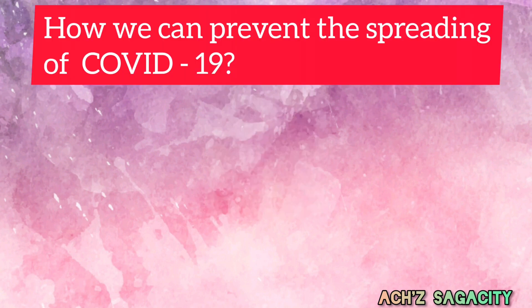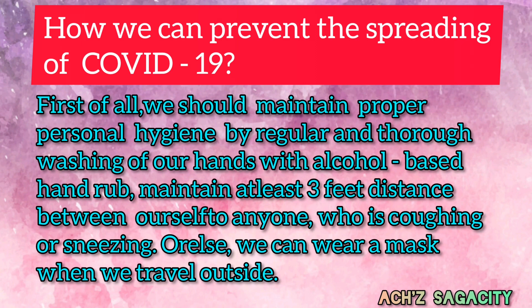The second question: How can we prevent the spreading of COVID-19? First of all, we should maintain proper personal hygiene by regular and thorough washing of our hands with alcohol-based hand rub. Maintain at least 3 feet distance between ourselves and anyone who is coughing or sneezing, or else we can wear a mask when we travel outside. Try to add your own points along with this.